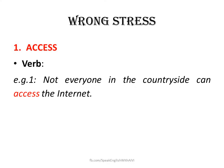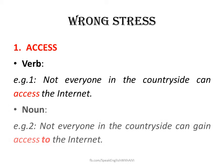Look at the first word and let's listen to the first example: 'Not everyone in the countryside can access the internet.' As you can see in this sentence, access is used as a verb. In the second example: 'Not everyone in the countryside can gain access to the internet.' Access is used as a noun. But in both cases, we pronounce this word with a stress on the first syllable. Remember that there's only one way to pronounce the word, even if we are using it as a verb or a noun, and that is access.